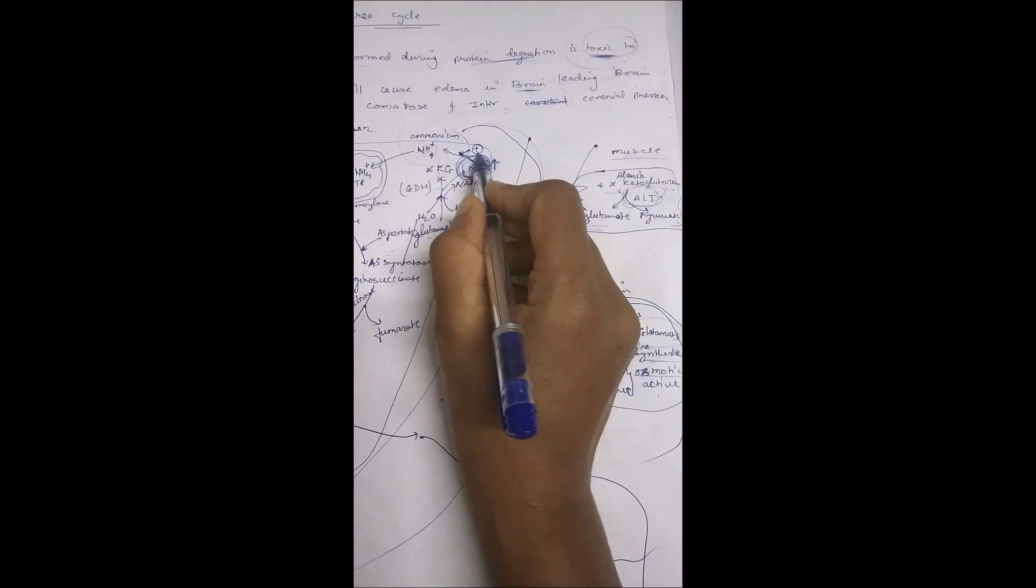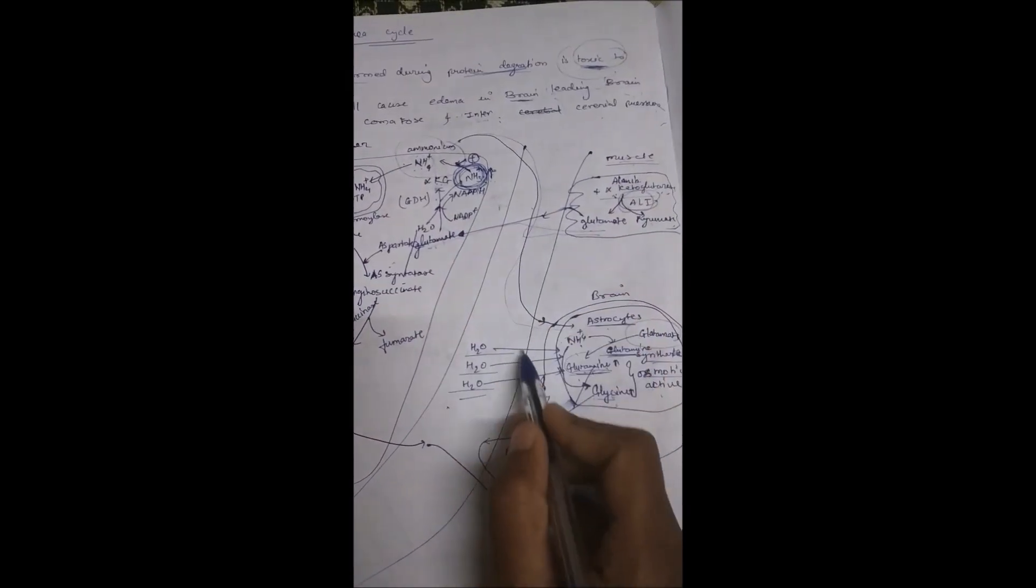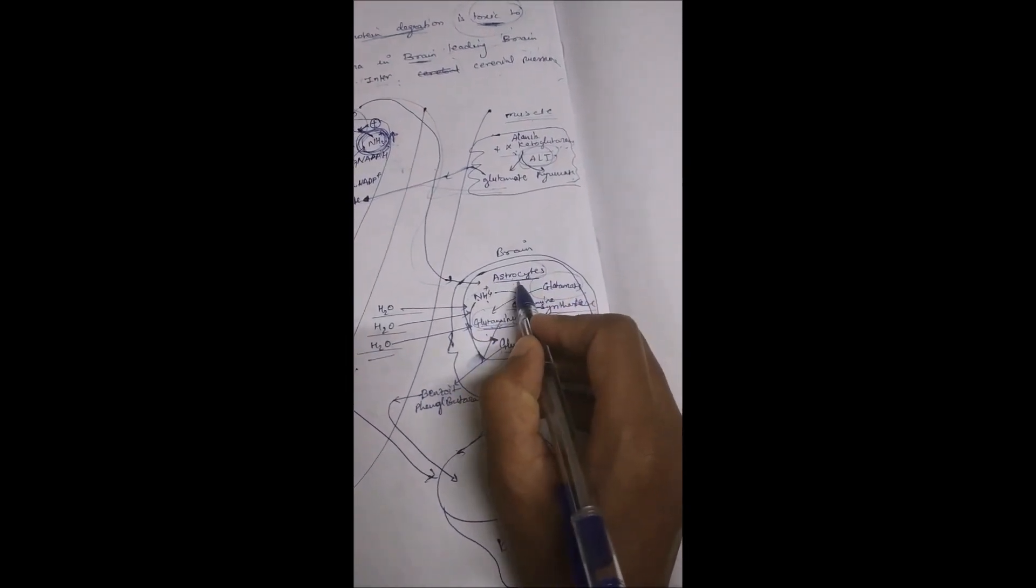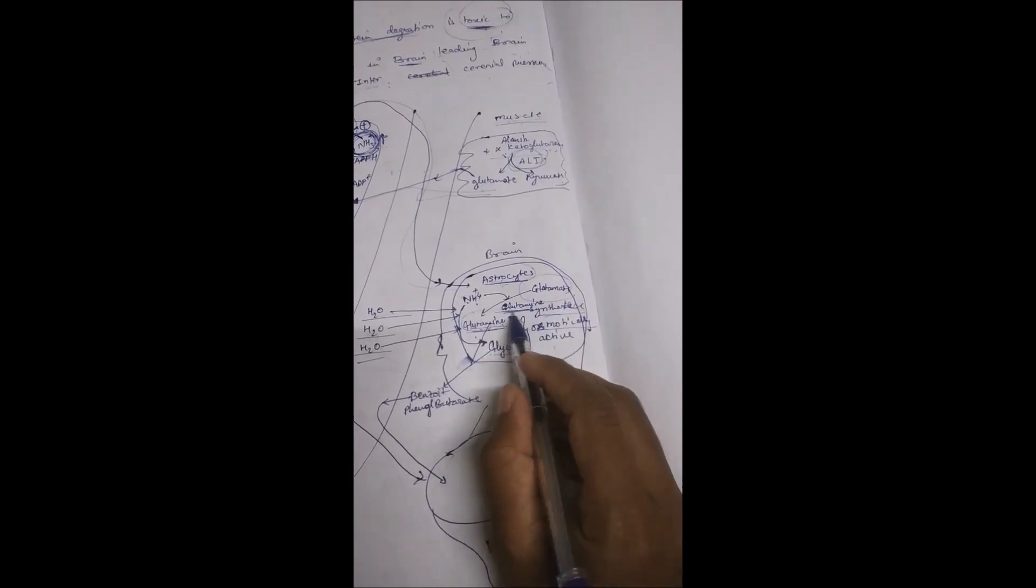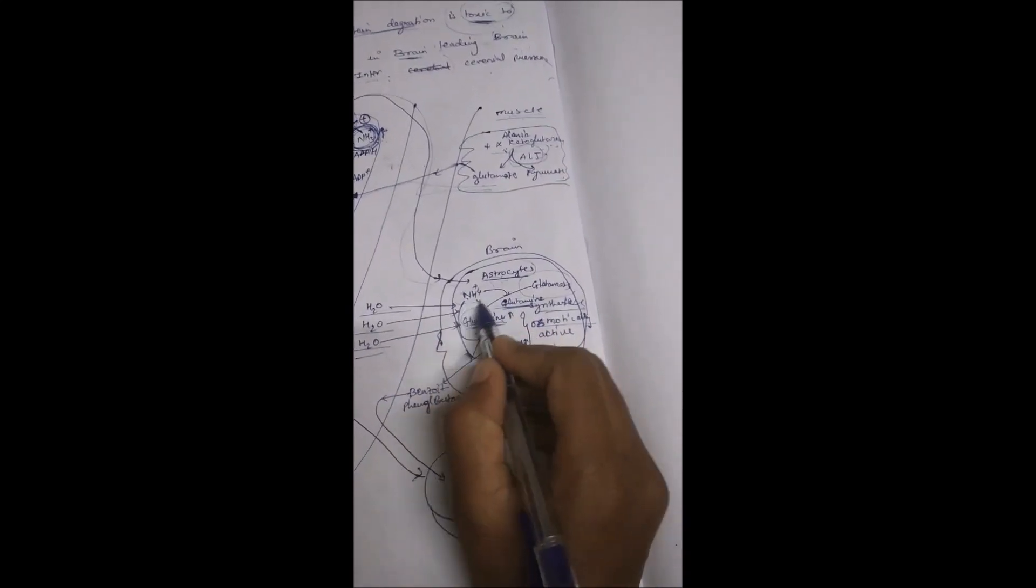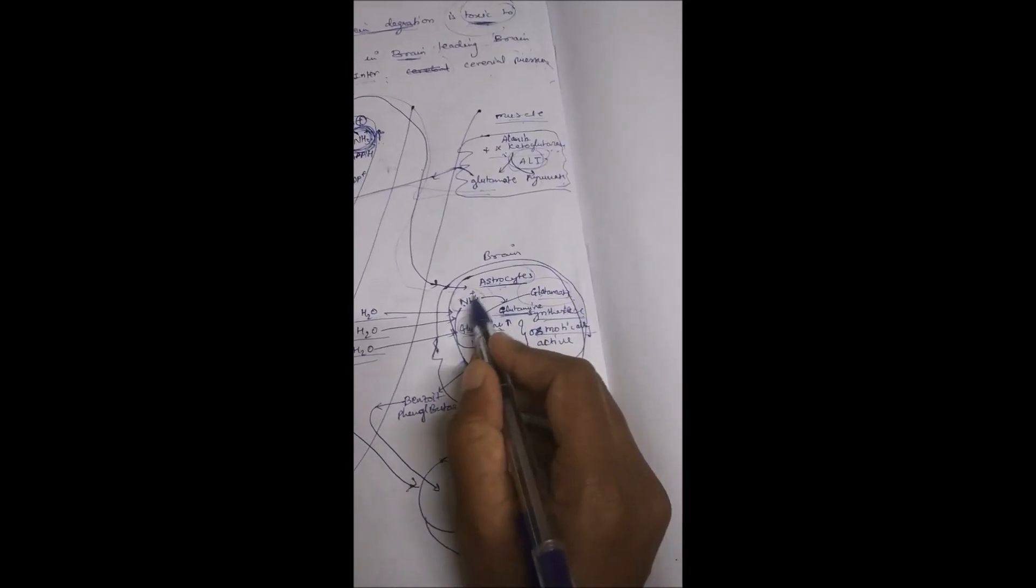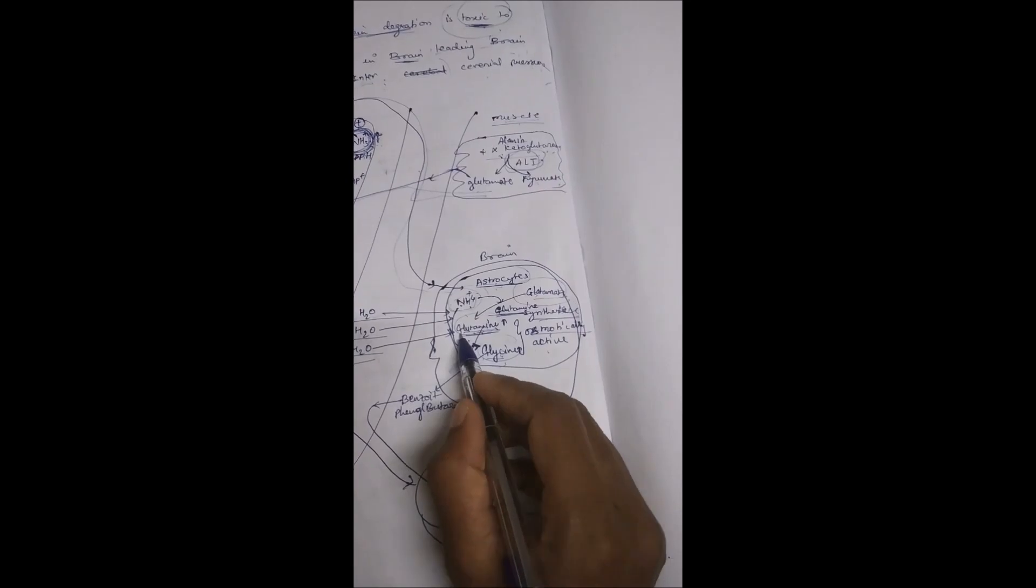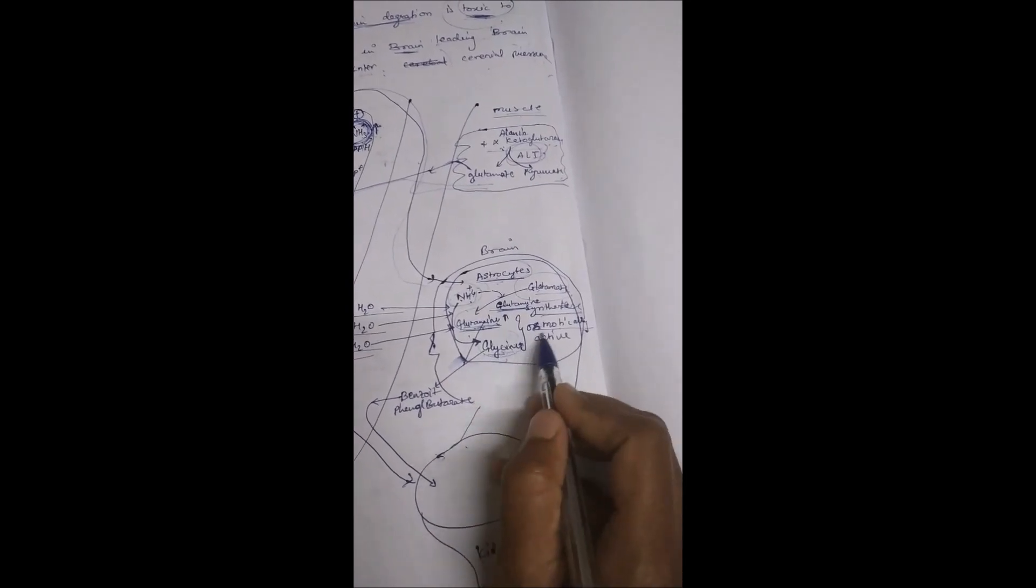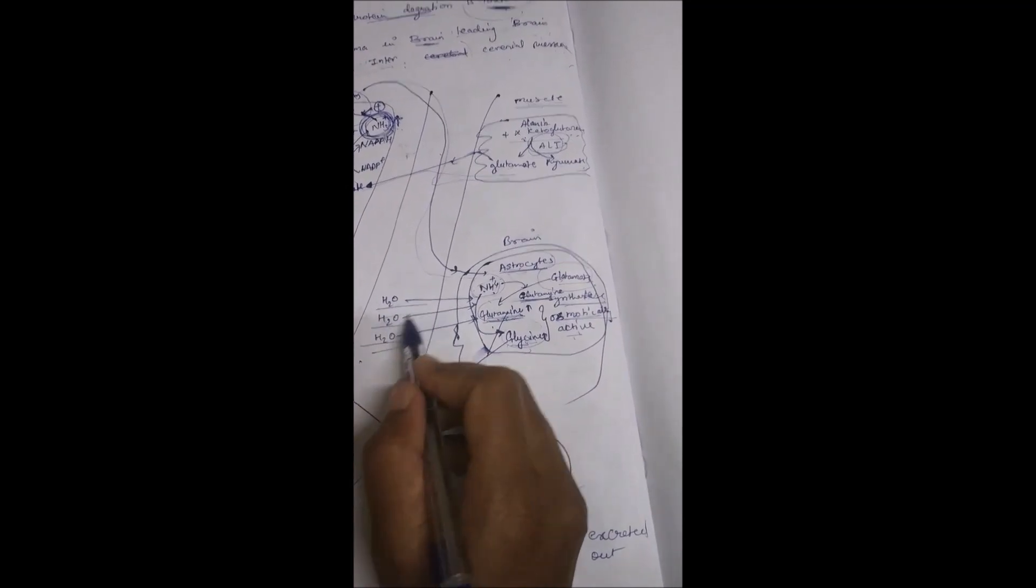This ammonia formed is very toxic. It will get converted into ammonium ion using one proton. This ammonia passes through blood vessels into the brain cell. In brain cells, there is a cell called astrocyte specific to the glutamine synthetase enzyme, which converts ammonium and glutamate into glutamine, or ammonia gets converted into glycine.